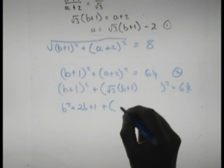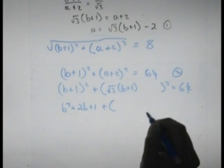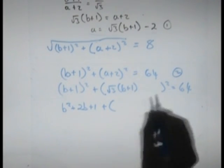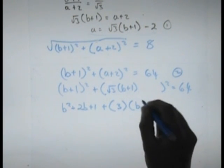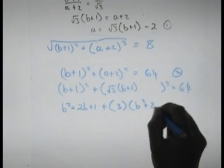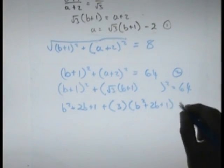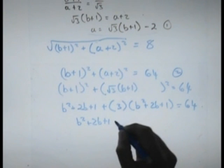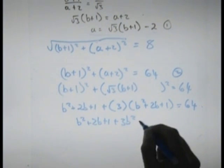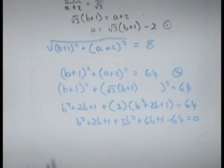Cancel out so that will be plus root 3 times b plus 1 all squared. Root 3 squared is equal to 3. B plus 1 squared is b squared plus 2b plus 1 equals 64. That means that we have b squared plus 2b plus 1 plus 3b squared plus 6b plus 1 minus 64 is equal to 0.